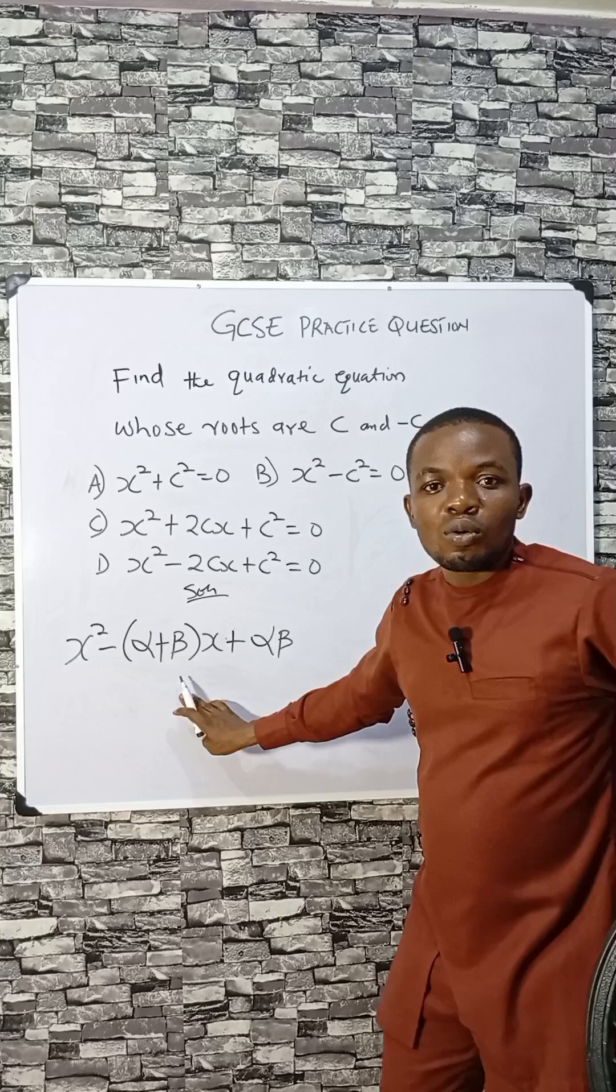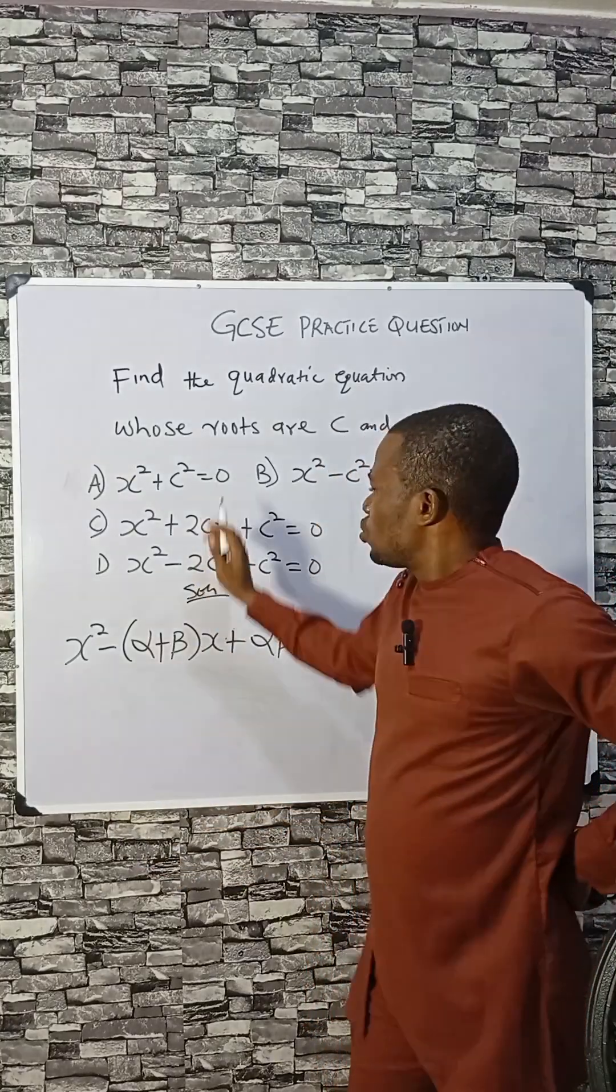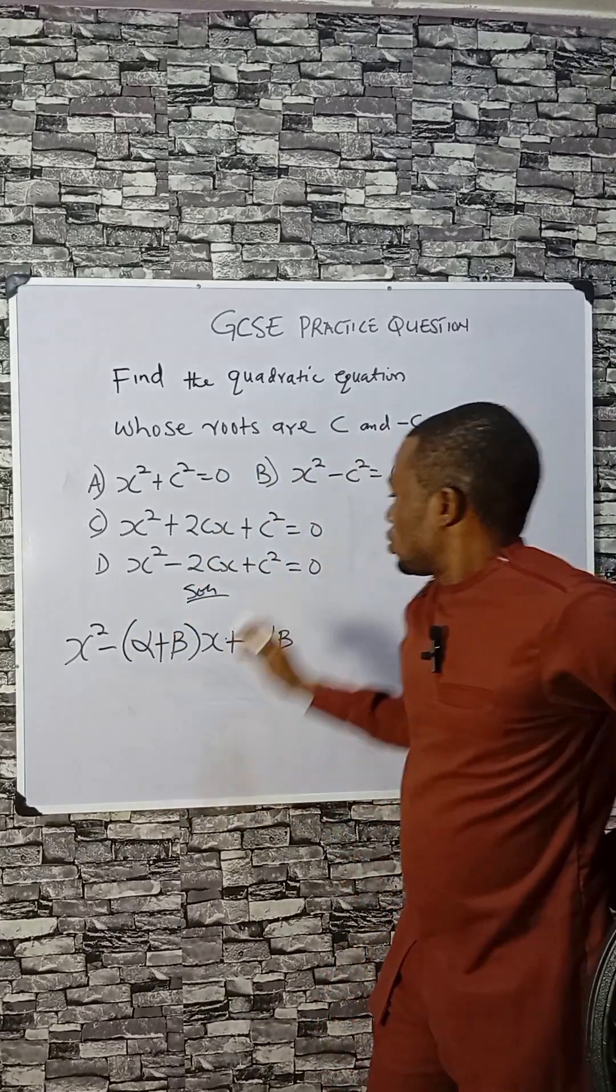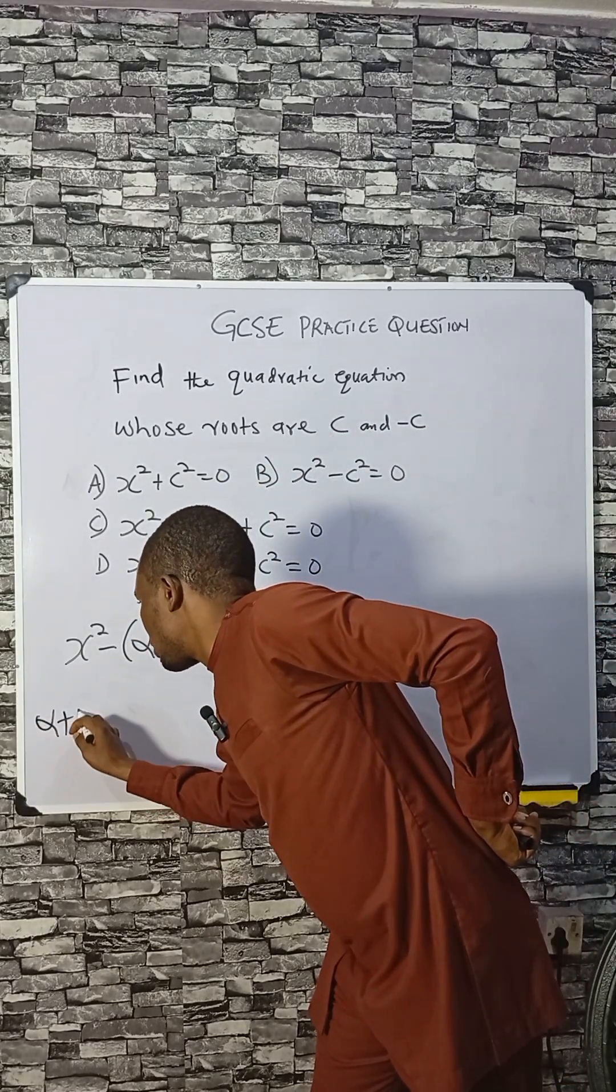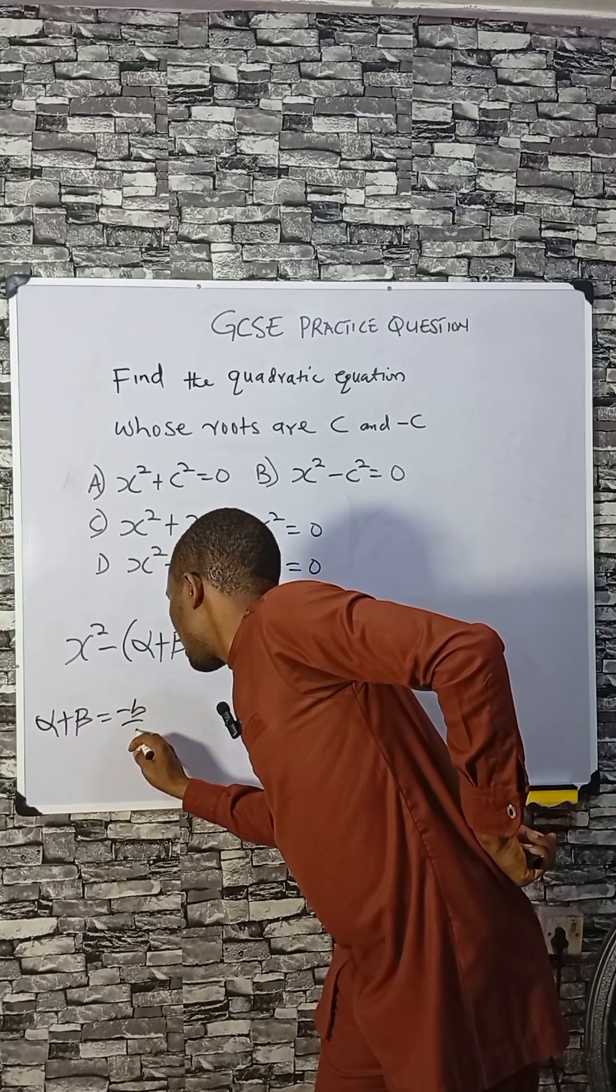beta. This is how a standard quadratic equation comes. Now we're going to find the sum of root of this equation. So sum of root, which is alpha plus beta, is given to be minus b over a.